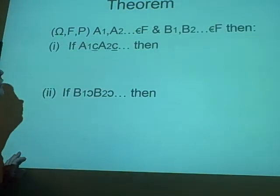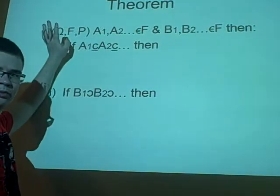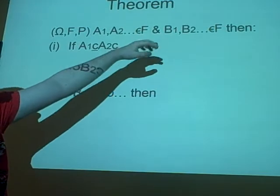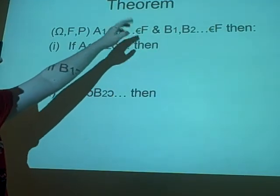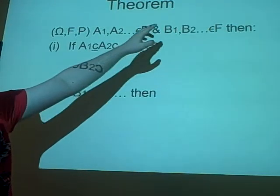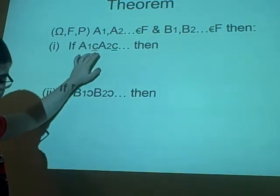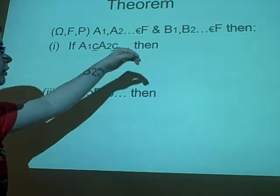Right, a theorem. Once again, this is our probability space, and we have A1, A2 going all the way up to infinity. Our elements of A, and this is the same for B. If A1 is a subset of A2, is a subset of A3, and so on,